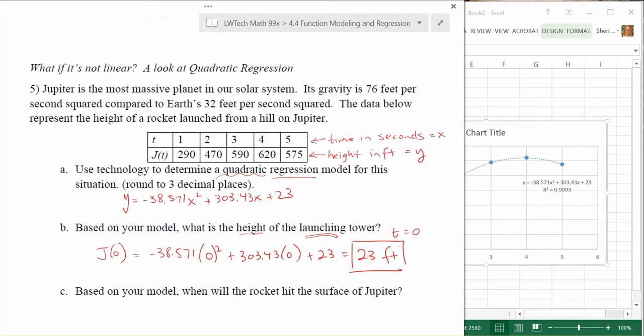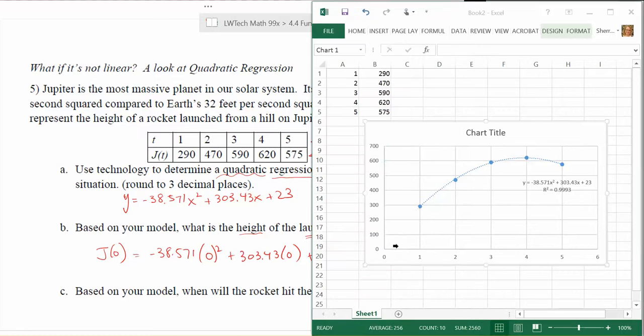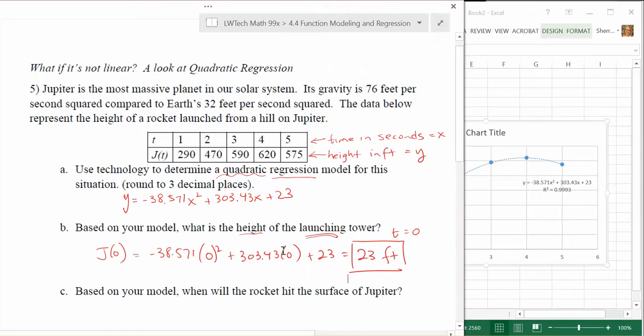The last question asks, based on our model, when will the rocket hit the surface of Jupiter? If you think of what's going on and look at the picture, we started at 23 feet. It's going to go up, up, up, come back, and then come down somewhere and crash. We're expecting sometime after five seconds it's going to come down and hit Jupiter. When it hits Jupiter, it will be at height zero. What we want to do is set the height to zero and solve for x. We can use x and t interchangeably in terms of our input values.